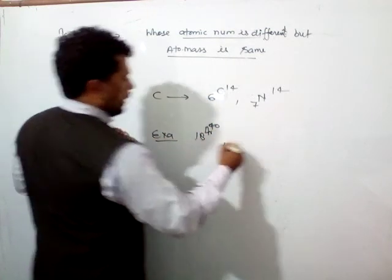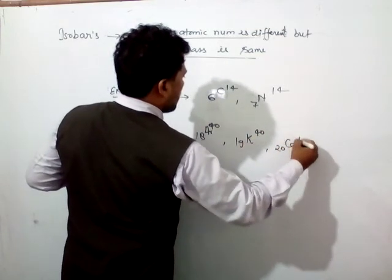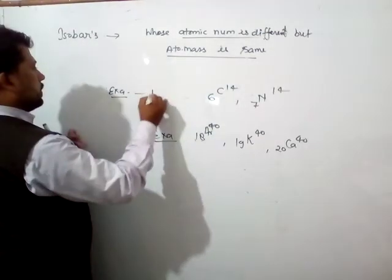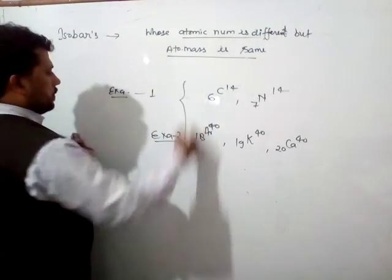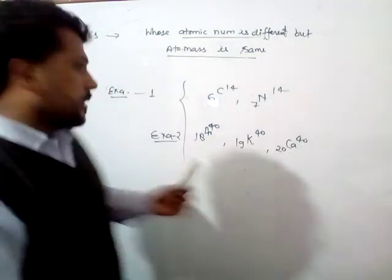18Ar40, 19K40, and 20Ca40. These are the examples for the isobars. Okay?